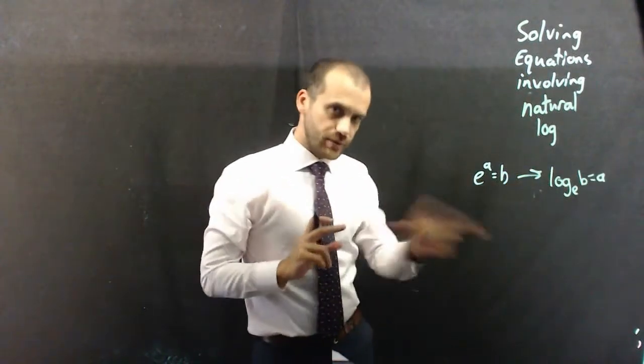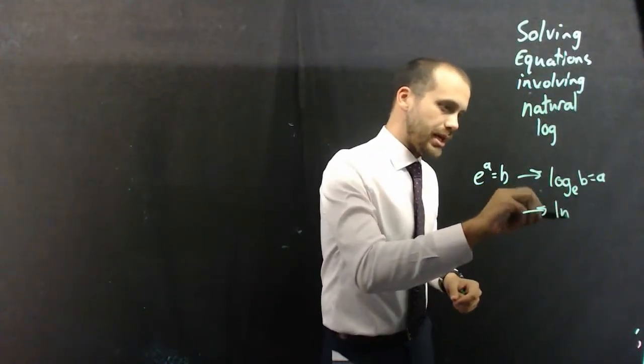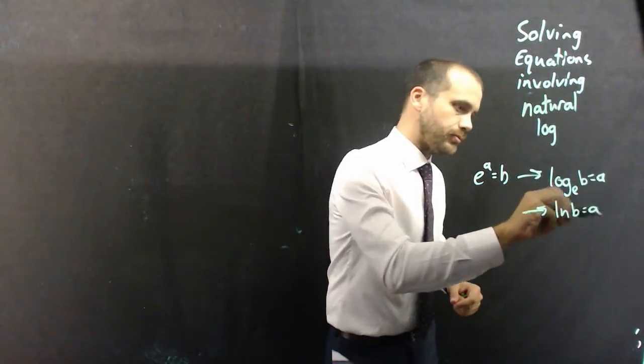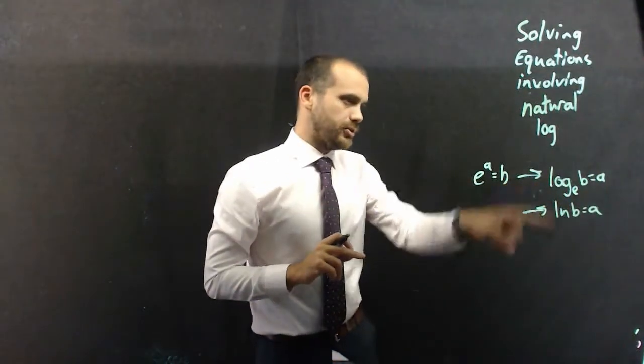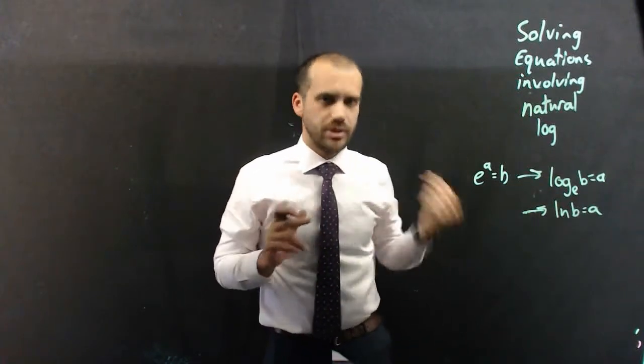So, two ways of expressing the same thing. Shorthand for natural log is just ln. They're identical, it's just ln is a faster way to write log base e. We use it so often that we need a shortcut.